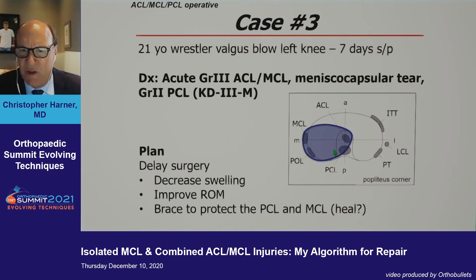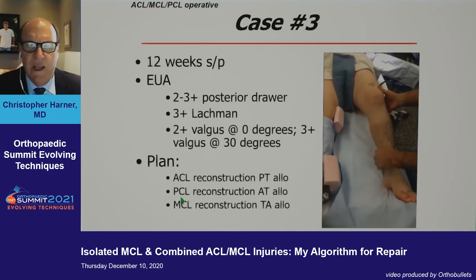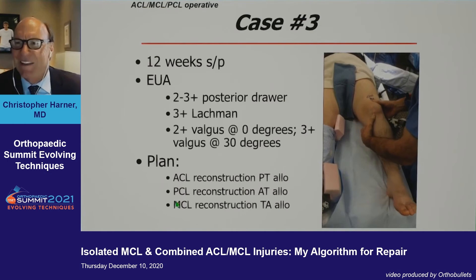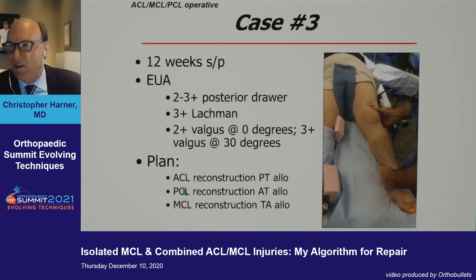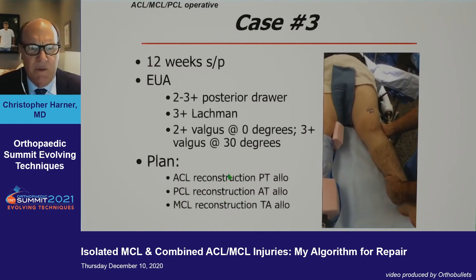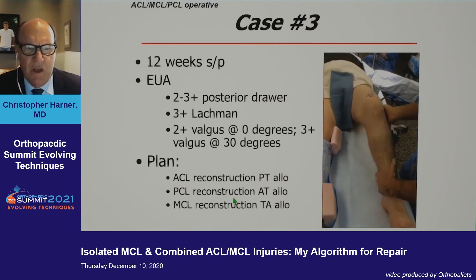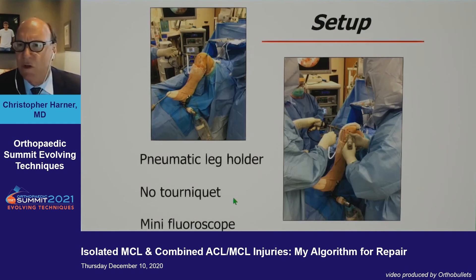Case three: a 21-year-old wrestler with an acute grade three ACL, MCL, grade two PCL, and a meniscal capsular tear. I delayed surgery hoping for some healing in the MCL and PCL, braced him in full extension — but he didn't comply with instructions and nothing healed. So I'm going to fix everything: reconstruct his ACL, MCL with Achilles tendon allograft, and PCL.